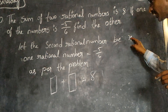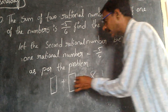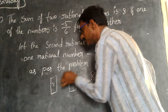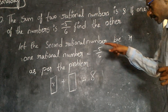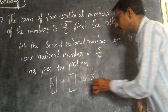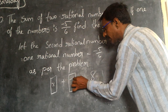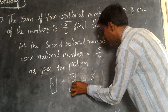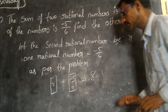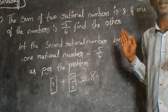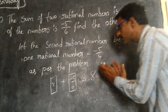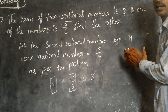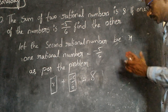If we look at the second one, we have X. If we look at the first one, we have minus five by six. It is clear.